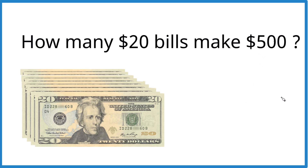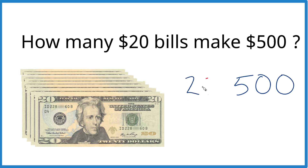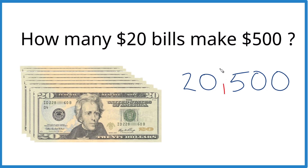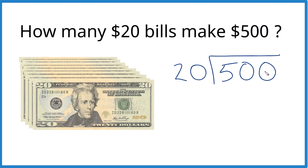We could also do this a little more mathematically. We have our $500 here, and what we want to know is how many times 20 goes into $500. So we take $500 divided by 20. If you do it on a calculator, you're going to find out 25 of these $20 bills make $500.